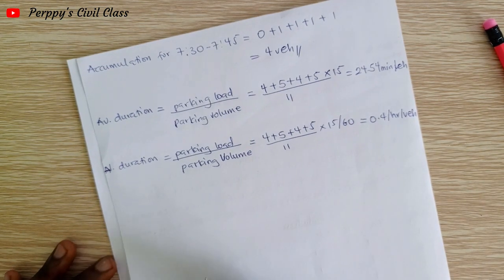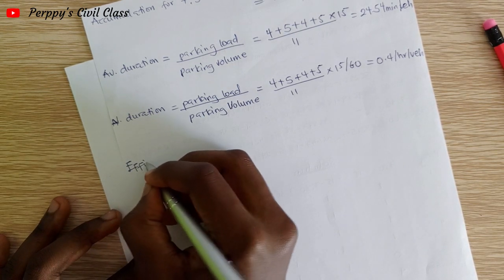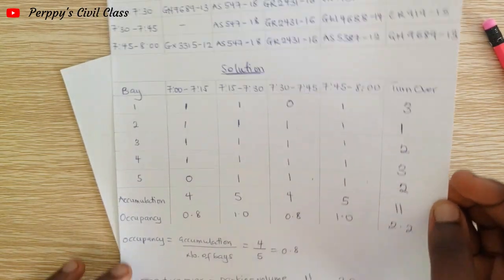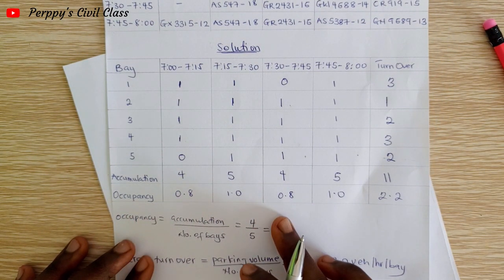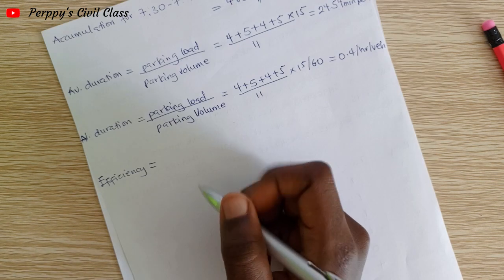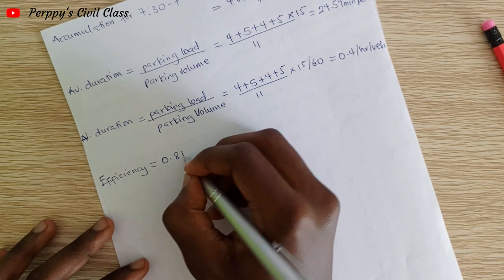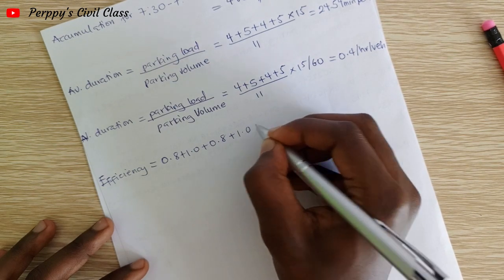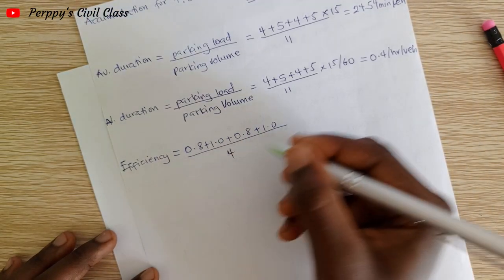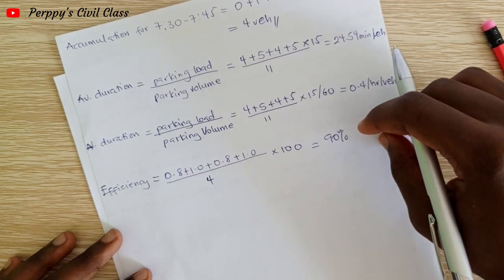The last part is the efficiency of the parking lot. Efficiency is given by the total occupancy. We add the occupancies: 0.8+1.0+0.8+1.0 = 3.6, divided by 4 intervals, times 100, giving us 90%. So the efficiency of this parking lot is 90%.